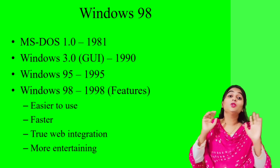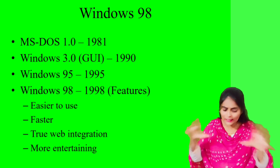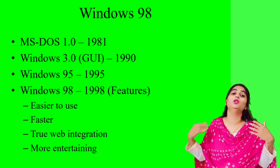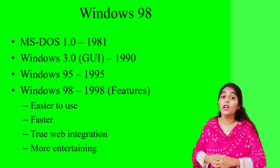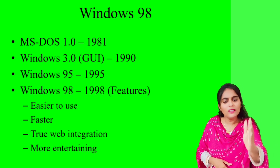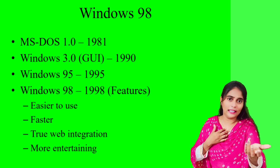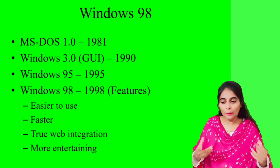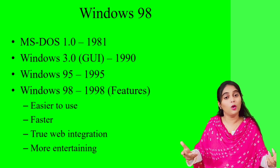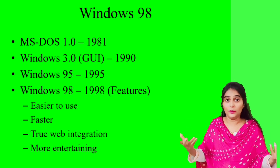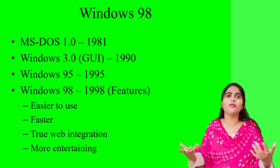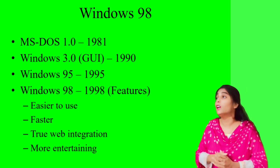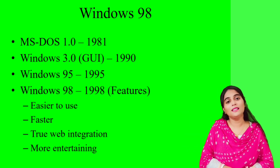The first feature of Windows 98 is that it is easier to use — meaning a user-friendly environment. A user-friendly environment makes the product attractive and easily accessible. Windows 98 had that capacity. Another reason it was easier to use was USB compatibility — when Windows 98 first came out, it supported USB, meaning any external hardware driver could be easily installed through the USB cord.